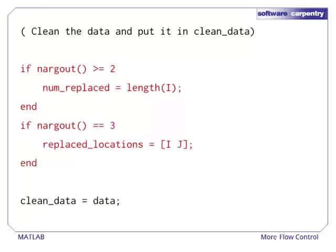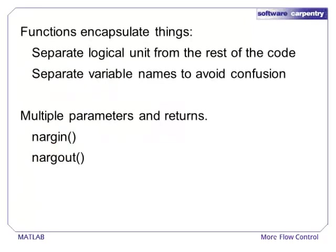If the caller requested a second variable, we assign the length of the replacement vector to numReplaced. If they want all of the locations that were replaced, then we assign the set of row and column indices to the variable replacedLocations. To review, functions can be used to encapsulate a single task or idea in a way that separates it logically from the rest of the code, and that separates variable names to avoid accidentally overwriting globally defined variables. MATLAB functions can have a variable number of parameters and return types, and the function has access to the number of each through the use of nargin and nargout.